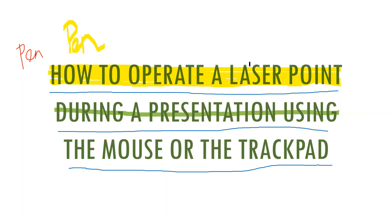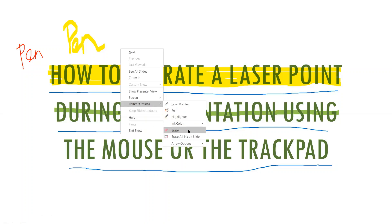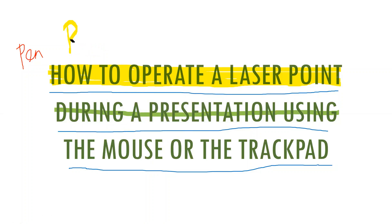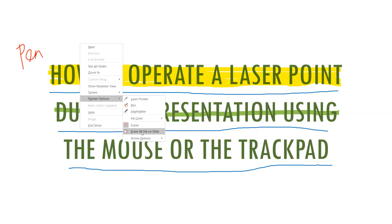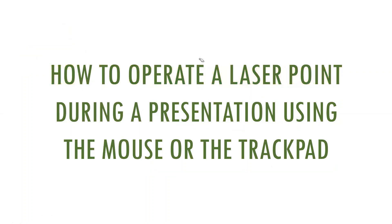If you want to exit the pointer option and get the normal cursor back, it is simple: click the escape button on the keyboard once. You also have the option to erase or remove any particular ink annotation, or erase all of them at once. Go to pointer options — there is an eraser option which helps you erase one thing at a time — and you also have an option to erase all ink on slide. These same options can be found in the left bottom corner.